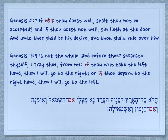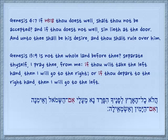In Genesis 4:7 there's an if and the number is there — thou doest well, shalt thou not be accepted. As another example, in Genesis 13:9: is not the whole land before thee? Separate thyself, I pray thee, from me — if thou wilt take the left hand then I will go to the right, or if thou go to the right hand then I will go to the left. The Im is there twice but in the English it does not refer back to the Strong's number. This is common with very small words.